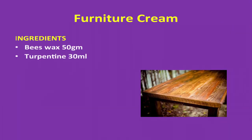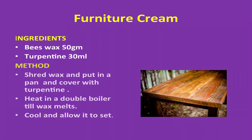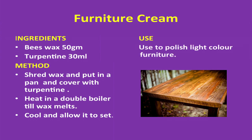Furniture polish recipe one — ingredients: beeswax 50 grams, turpentine 30 ml. Method: shred wax and put it in a pan, cover with turpentine, heat in a double boiler till wax melts, cool and allow it to set. Use: it is used to polish light color furniture.